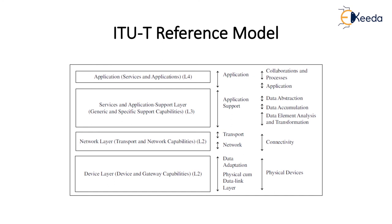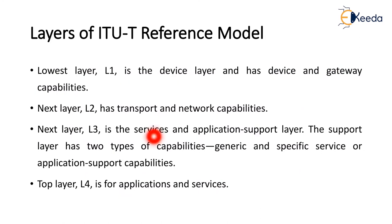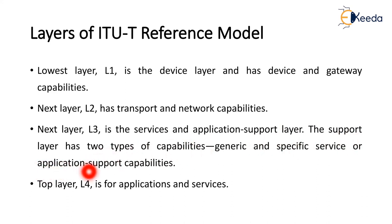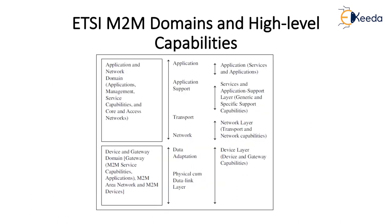To summarize the ITU reference model: L1 device layer has device and gateway capabilities; L2 has transport and network capabilities; L3 is the service and application support layer with two types of capabilities — generic and specific services or application support capabilities; and the top layer L4 is the application and services layer.